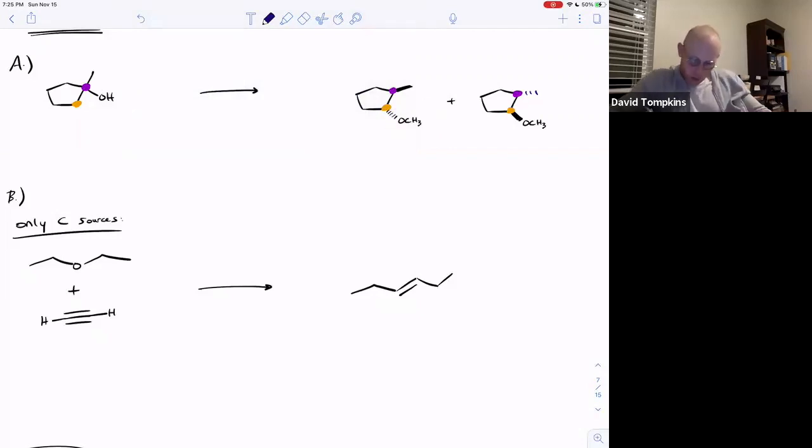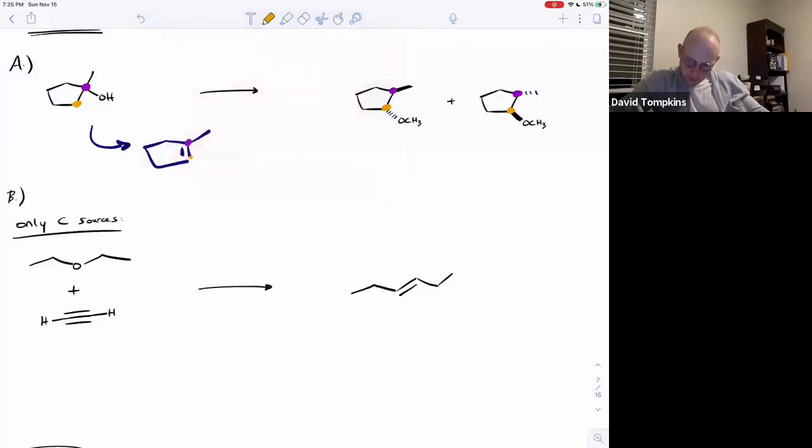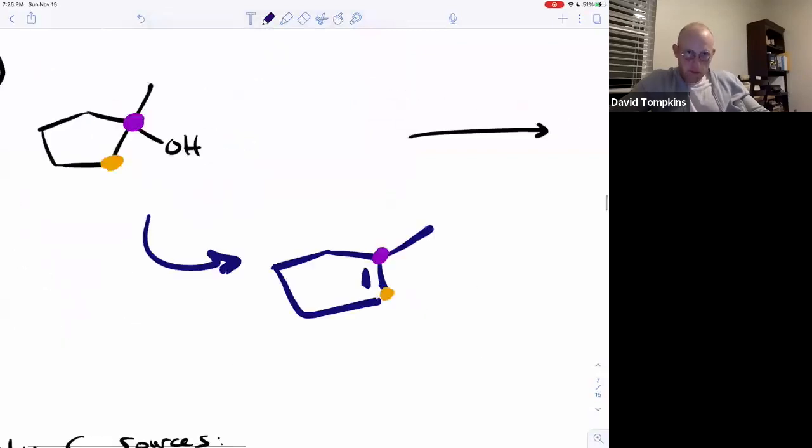which means that the intermediate to make is the alkene between those two adjacent carbons, where you have this carbon-carbon pi bond. Once again, we want to make an alkene, but this time we're doing it from an alcohol instead of an alkyl halide.